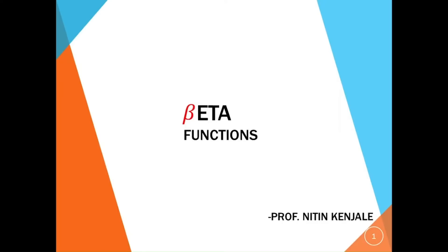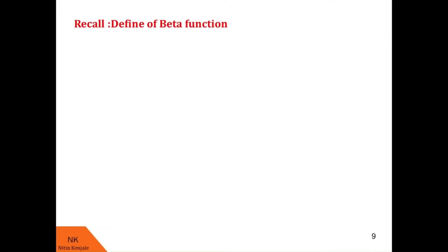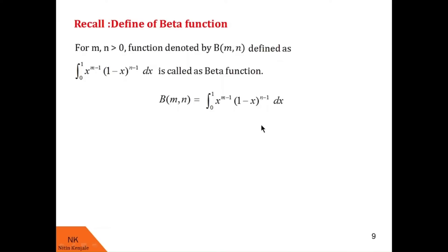Let us first revise several definitions of beta functions. We define for m, n greater than 0, beta of m,n as an integral of x raised to m minus 1 into 1 minus x raised to n minus 1 dx over the limit 0 to 1. We call this definition the first form of beta of m,n.